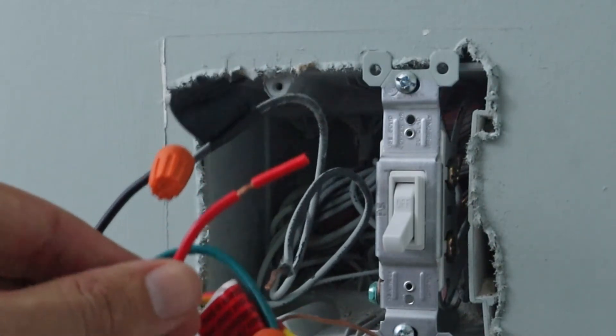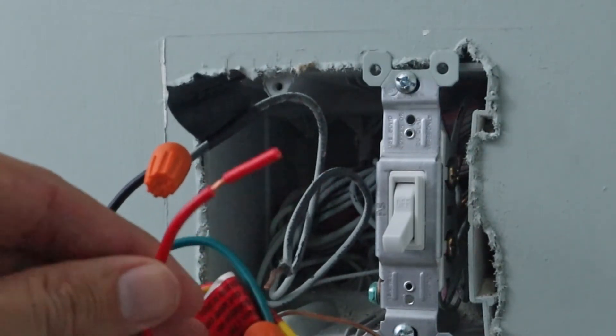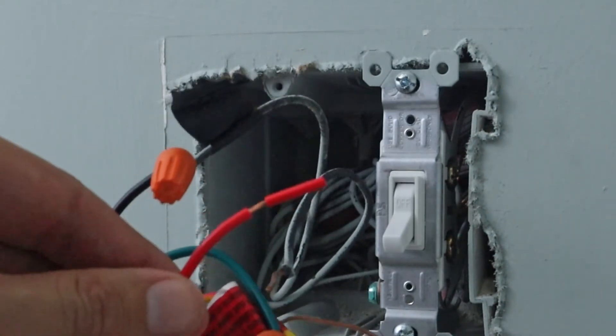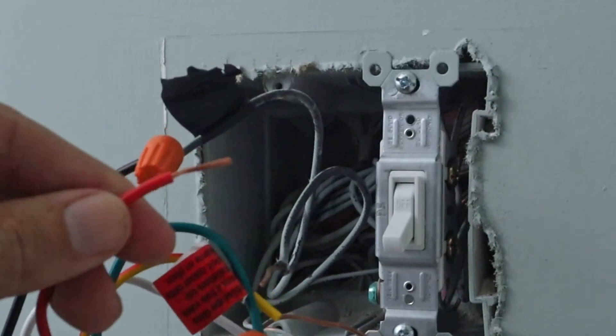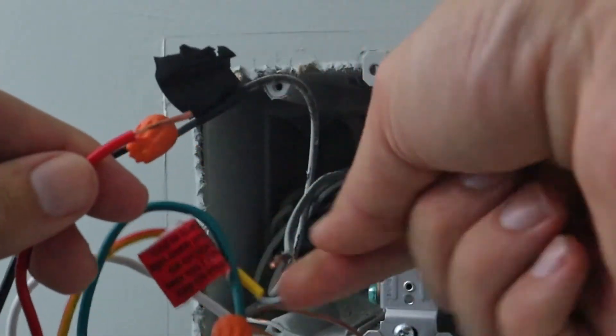All right, so the next wire we're going to work on is going to be this red wire. This red wire is the load wire, and this is what is then going to take the electricity from the switch to the fan. So we want to use the black wire that we did not put the tape on, and that is our load wire.